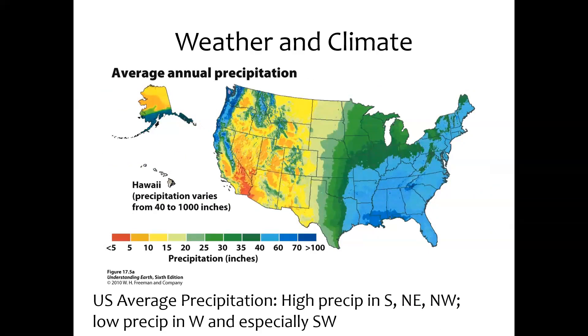In the US, it's a little different. We see high precipitation in the south, the northeast, and especially in the Pacific Northwest. There's low precipitation in the Alaskan Arctic and in the west, especially the southwest. There's a dearth of precipitation there - lots of deserts in the American southwest.